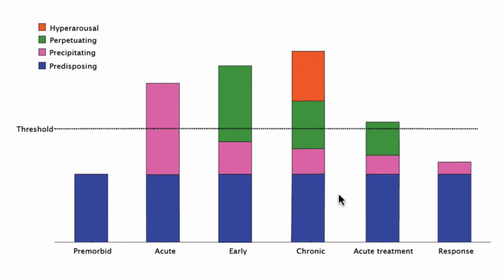These four areas are what we need to tackle in planning a management strategy for insomnia. This highlights why medication isn't the answer for chronic insomnia — medications arguably act on the biological component, but that's often not what's pushing people above the threshold. That's where psychology-based treatments come in: looking at people's thinking around sleep and changing it, and looking at their behaviours around sleep and changing those, through cognitive behavioural therapy for insomnia (CBT-I).